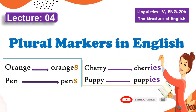We'll look at how spellings are going to be changed — like orange/oranges, pen/pens, cherry/cherries, puppy/puppies. This topic is from Linguistics Part 4, English Code 206, The Structure of English. So without further ado, let's begin today's topic.